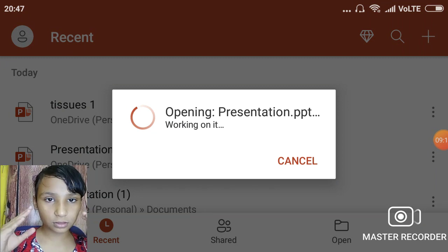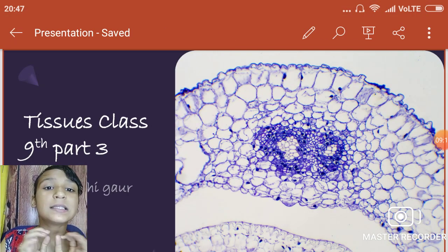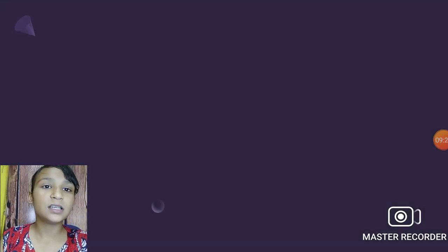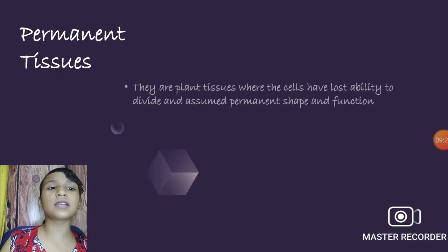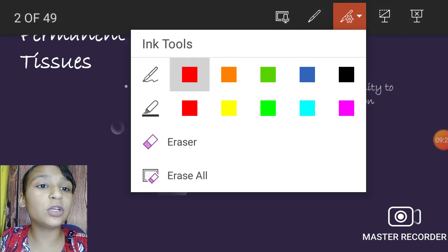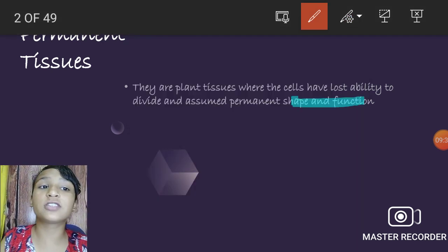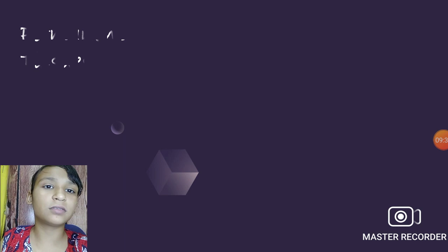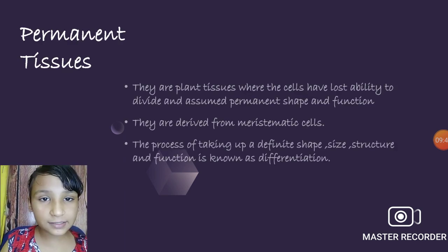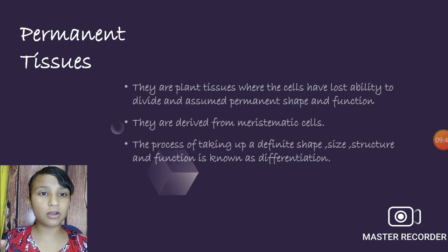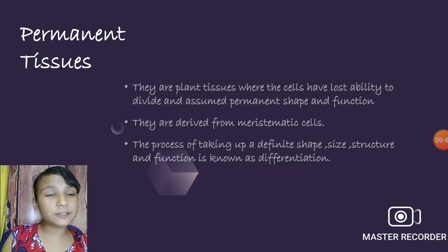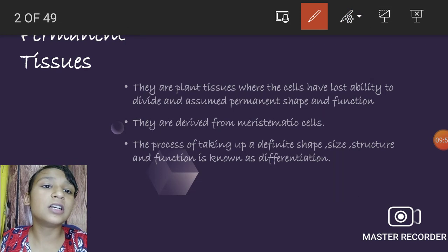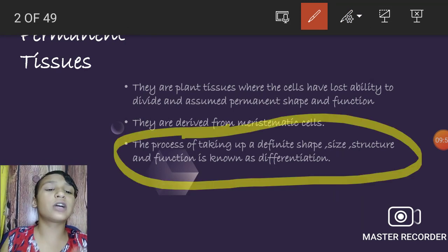Now, simple permanent tissue and complex permanent tissue. Permanent tissues are those that have lost the ability to divide and have attained a specific shape, size, and function. They are derived from meristematic cells, which are the parent cells for all. The process of taking a definite shape, size, structure, and function is known as differentiation.